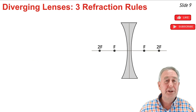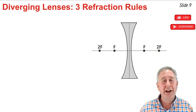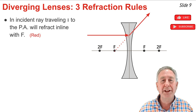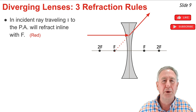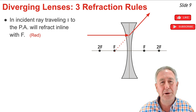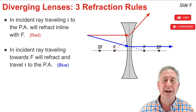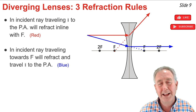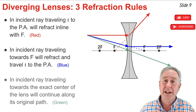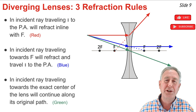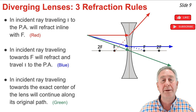The previous slide illustrated two of the three so-called rules of refraction for diverging lenses. The first rule is that a ray of light traveling parallel to the principal axis will refract through the lens and travel away from the principal axis, but in line with the focal point — demonstrated by the red incident and refracted ray. Rule two is that a ray of light traveling towards a focal point on the opposite side of the lens will refract and travel parallel to the principal axis, shown by the blue incident and refracted ray. The third rule is that a ray heading towards the exact center of the lens will refract as it enters and as it leaves, but the net effect is that it continues along the same straight-line path, demonstrated by the green incident and refracted ray.